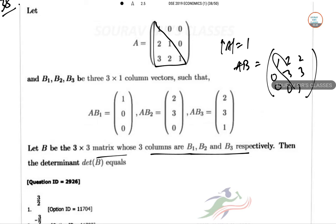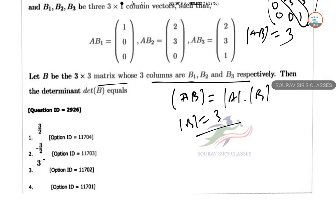So determinant of AB is again 1 times 1 times 3 equals 3. Using the fact that determinant of AB equals determinant of A times determinant of B, the determinant of B equals 3. This is the correct answer.